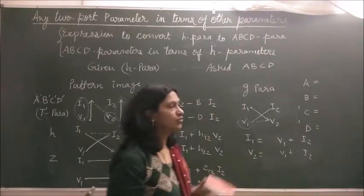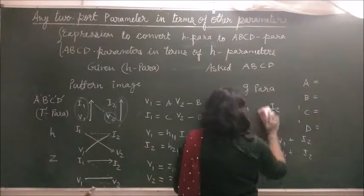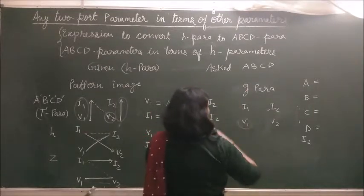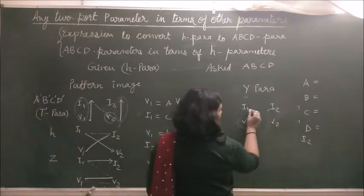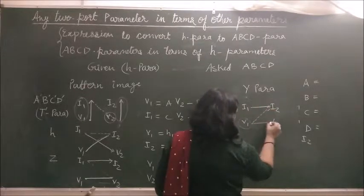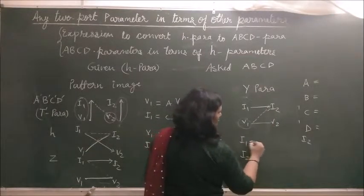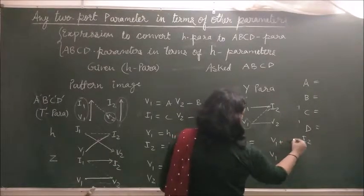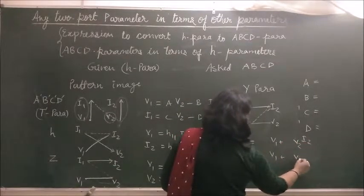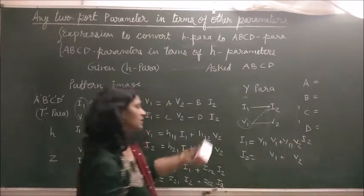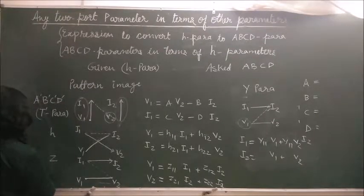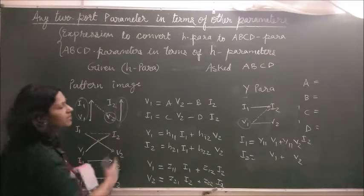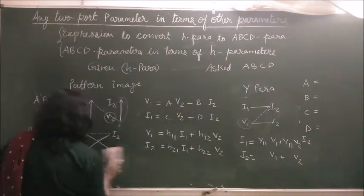Write down G11, G12 sequentially. The third remaining parameter is Y, which is the inverse of Z parameter. In Z parameter we start from V1, but for Y we start from I1. Move from I1 to I2, then come back. So I1 and I2 come on the left-hand side, V1 is the first term variable and V2 is the second term variable. Y parameter is the mirror image of Z, G parameter is the mirror image of H, and A'B' is the mirror image of ABCD. You can easily write all parameters using this pattern image.